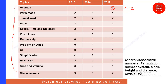The next topic is Percentage — another important topic. There is no fixed pattern but you can expect two to three questions from this topic. Coming to the next topic, Time and Work: continuously there have been two questions, so we expect two questions from this topic as well.